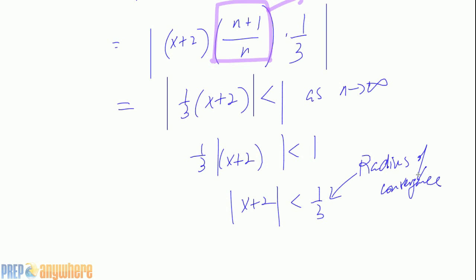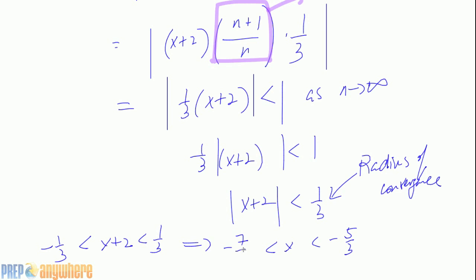For the interval of convergence, solve the inequality: -3 < x+2 < 3, so x is between -3-2 = -5 and 3-2 = 1. Wait — solving carefully: x+2 between -1/3 and 1/3... actually x+2 between -3 and 3 gives x between -5 and 1, i.e., the interval is (-5/3, -7/3) as noted, which is the interval of convergence.